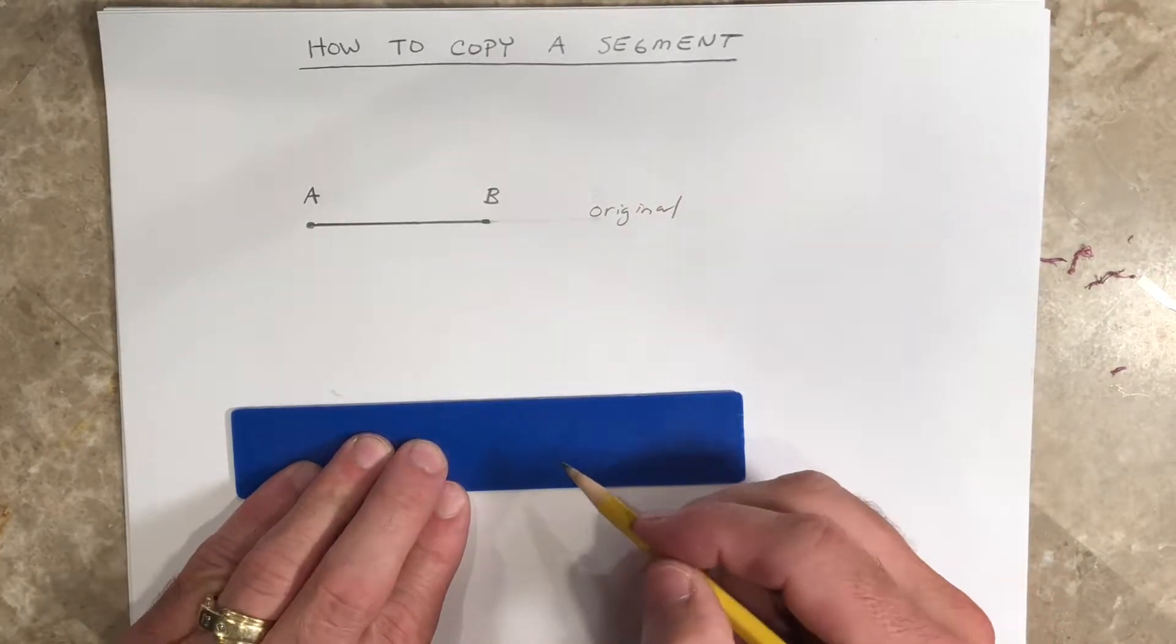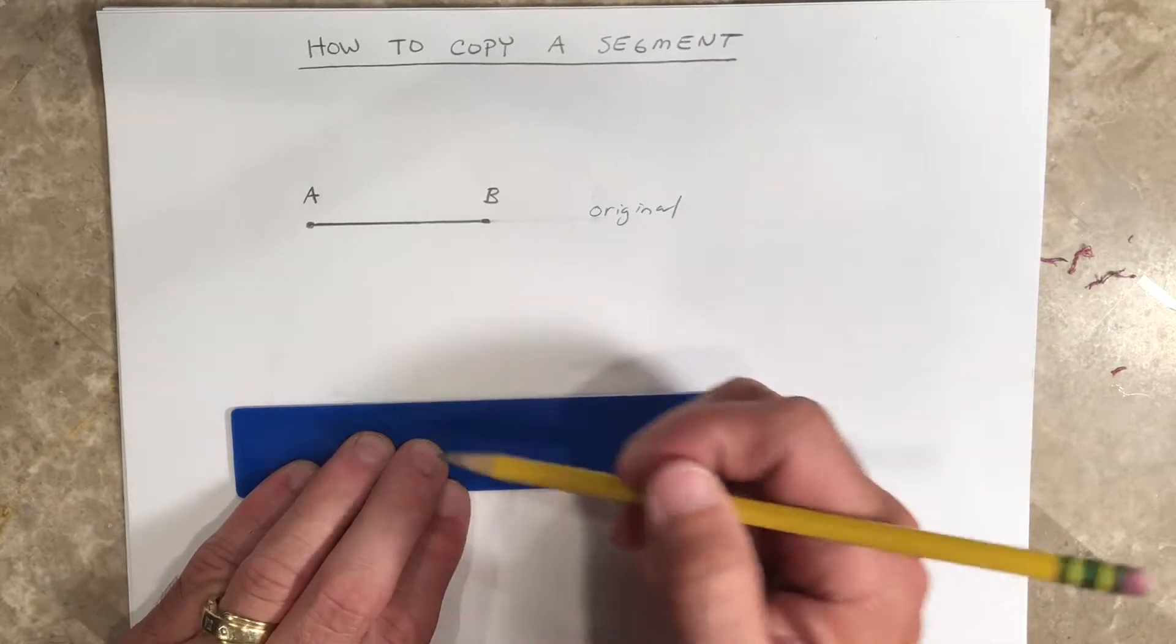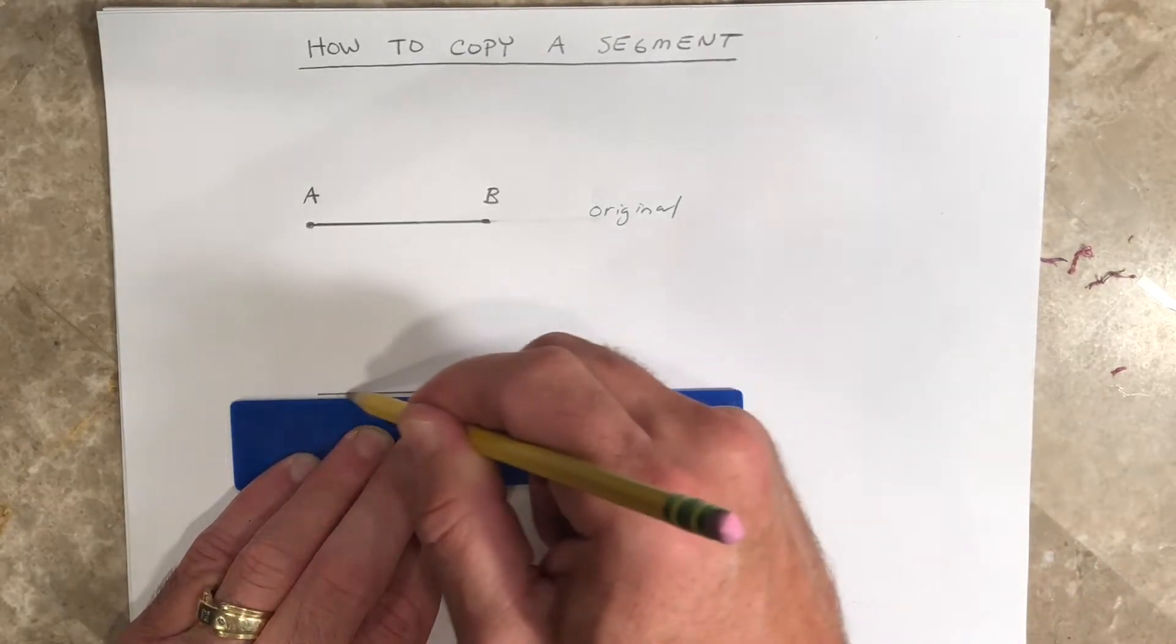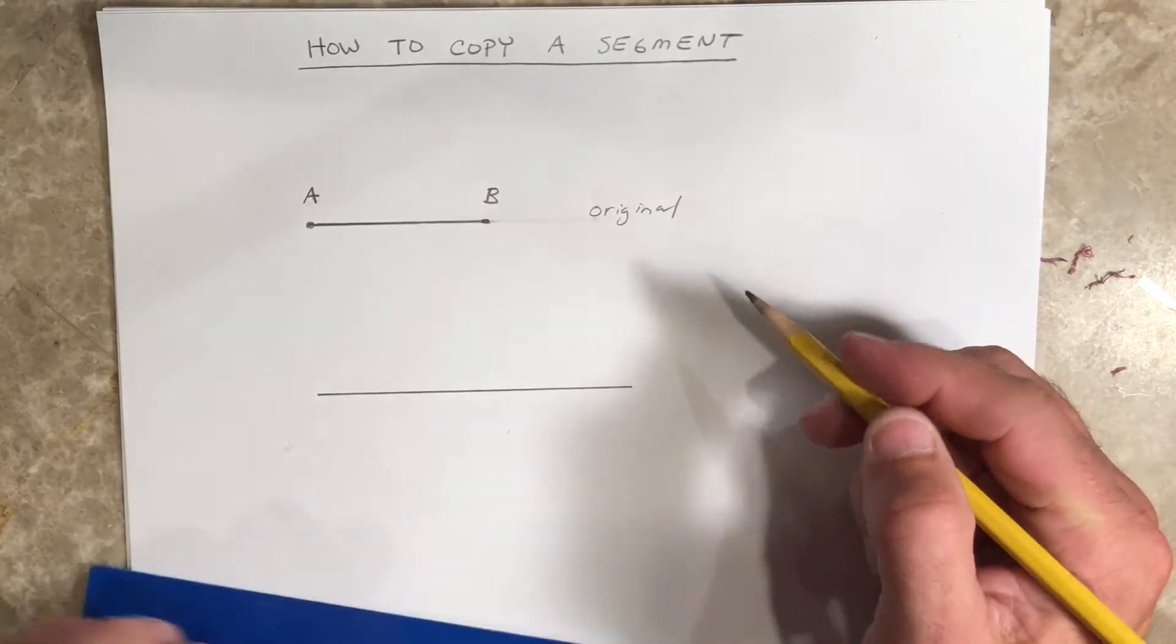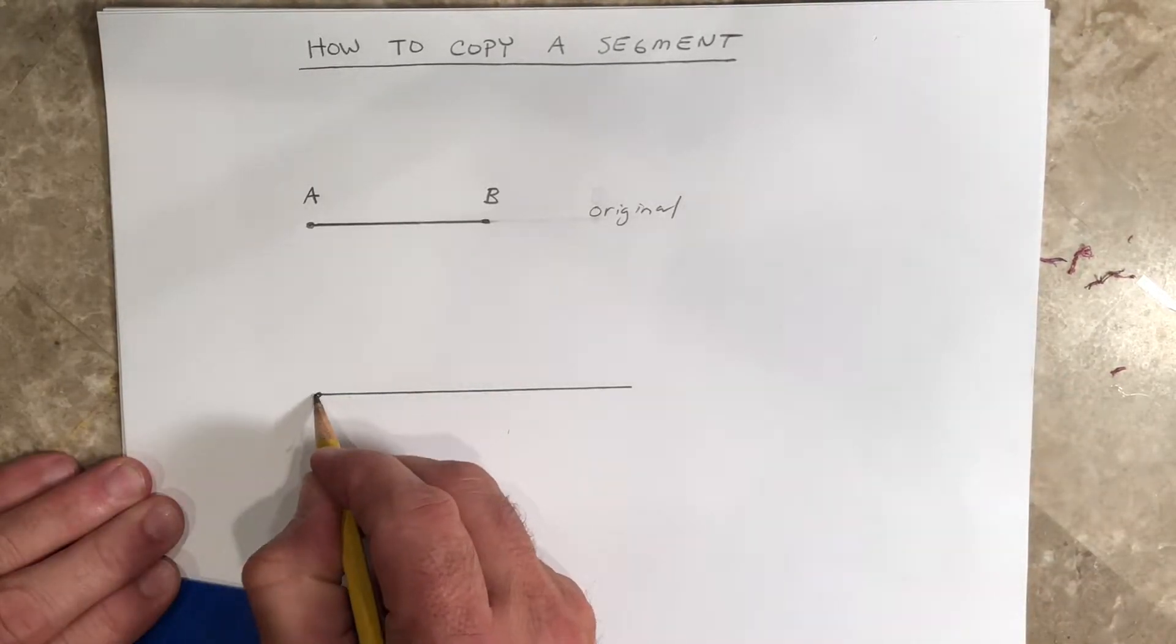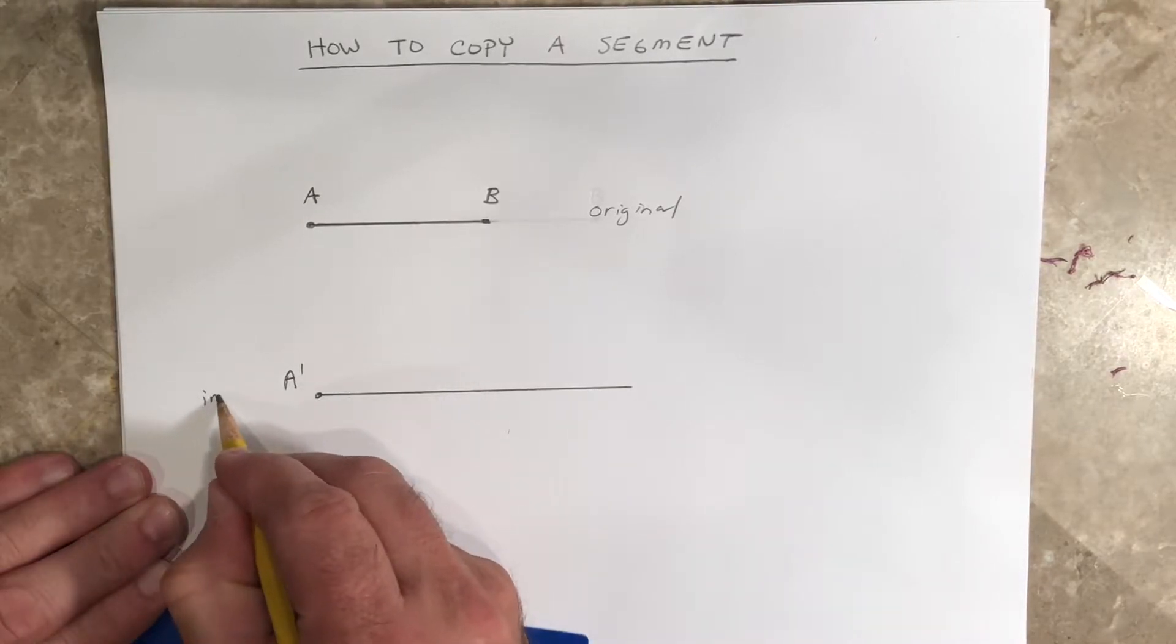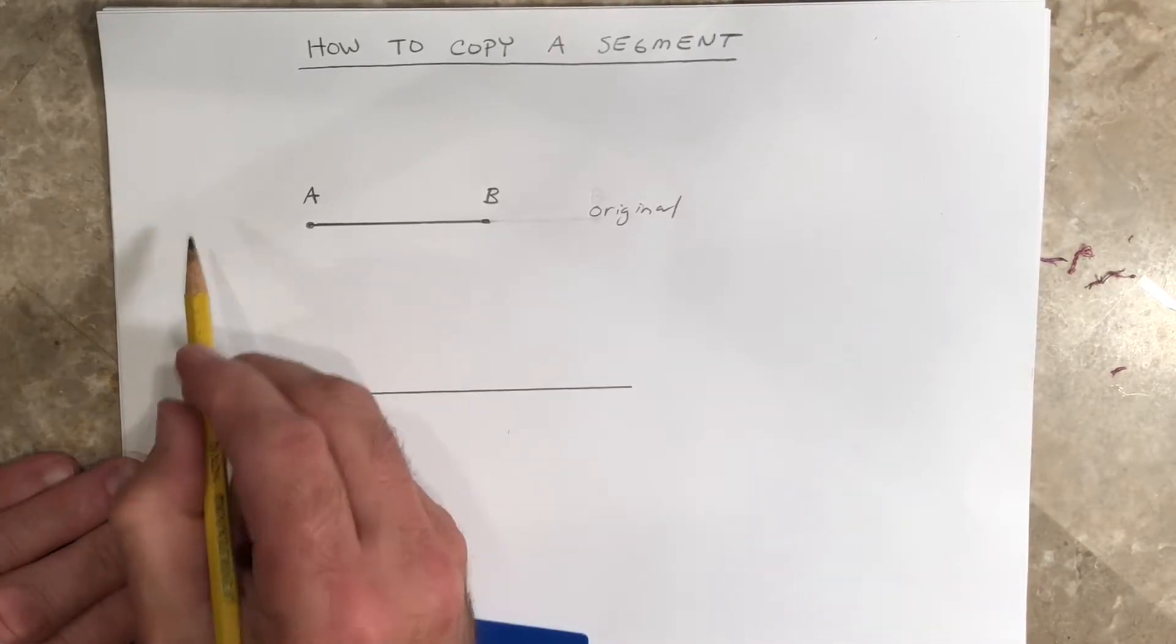I know it's a ruler, but I'm not using the side where I can measure. I'm actually going to just draw a segment that's longer than the one you're given and label that first point A' because this is the image, this is kind of your copy, where the above one is called the pre-image.